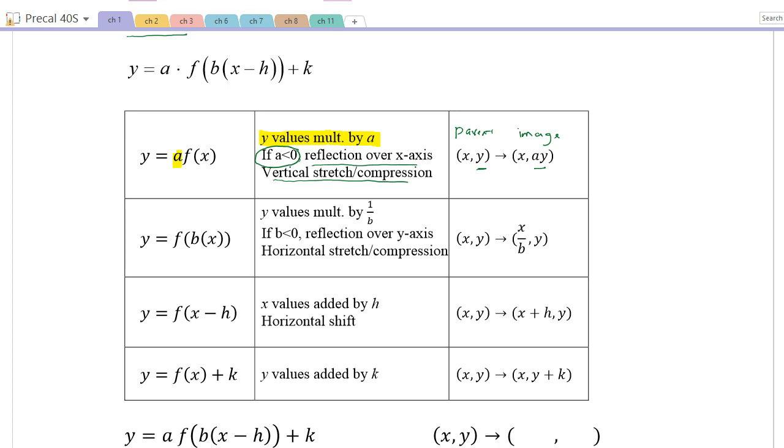Similarly, now for the b value, and you remember, things that happen inside of the function, inside of here, it's kind of like you have to undo them. So here, things inside this function are being multiplied by b. So we have to think, okay, to get the same result, we're going to have to divide x by b. So here, oh, and I made an error, didn't I? So instead of y values being multiplied by this, we should change this. This should say the x values are being multiplied by 1 over b.